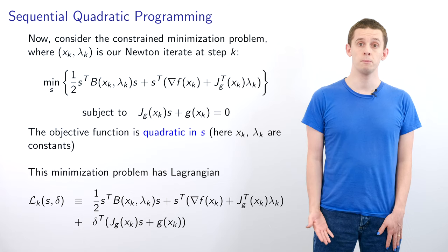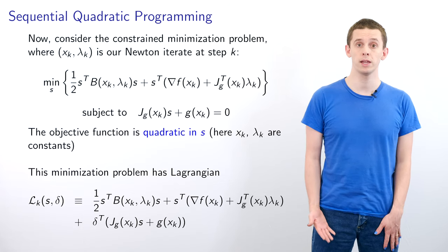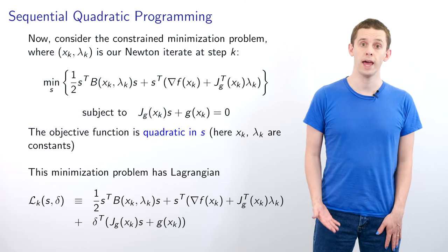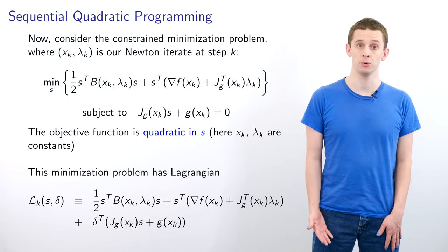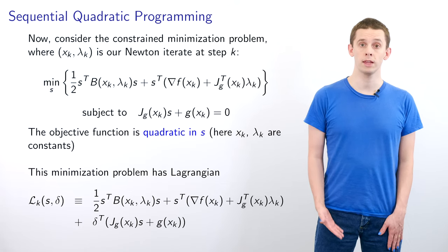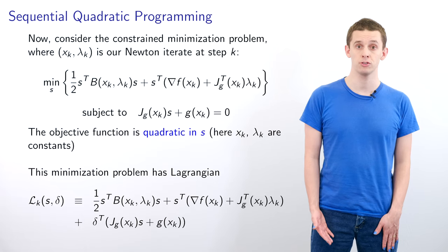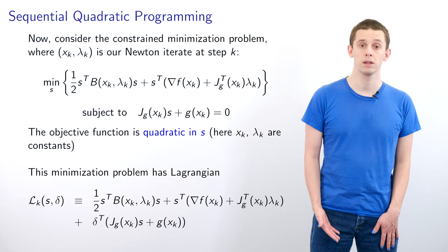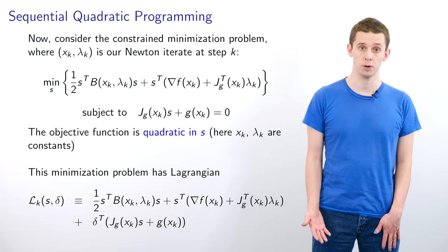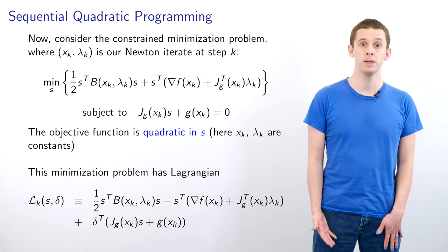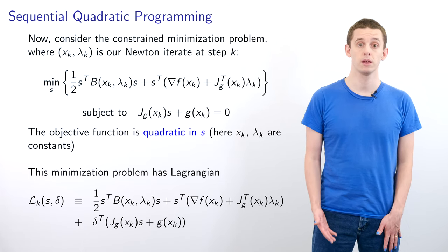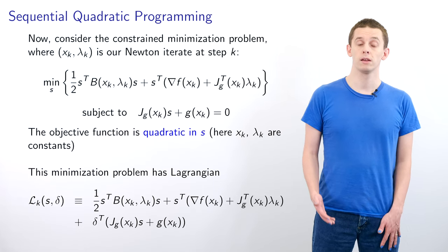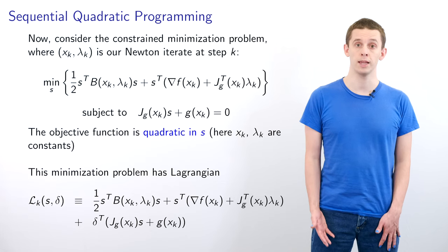Now let's take a step back and consider a constrained minimization problem with a specific form. Let's say x_k and λ_k are our Newton iterate at step k. Let's introduce a vector s in n dimensions and look at a minimization problem over s where we want to minimize (1/2)s^T B(x_k, λ_k)s + s^T(∇f(x_k) + J_g^T(x_k)λ_k).